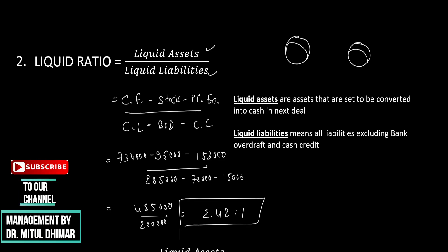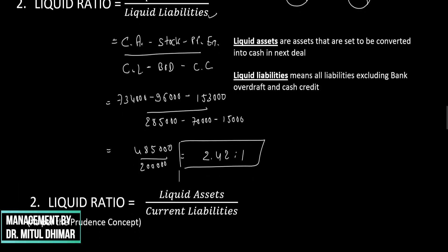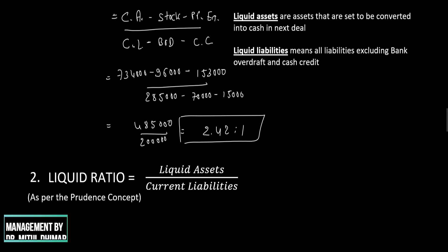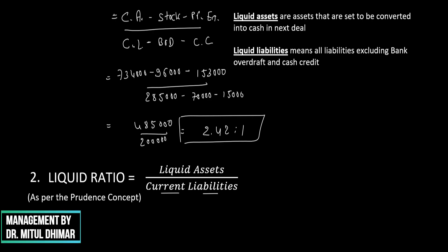Those who follow the prudence concept of accounting use an alternative formula: liquid assets divided by current liabilities (not liquid liabilities). The prudence concept says ignore future income but consider future expenses, meaning all current liabilities are treated as liquid liabilities whether secured or not. Using liquid assets of 4,85,000 divided by current liabilities of 2,85,000, the liquid ratio as per the prudence concept is 1.70 to 1.